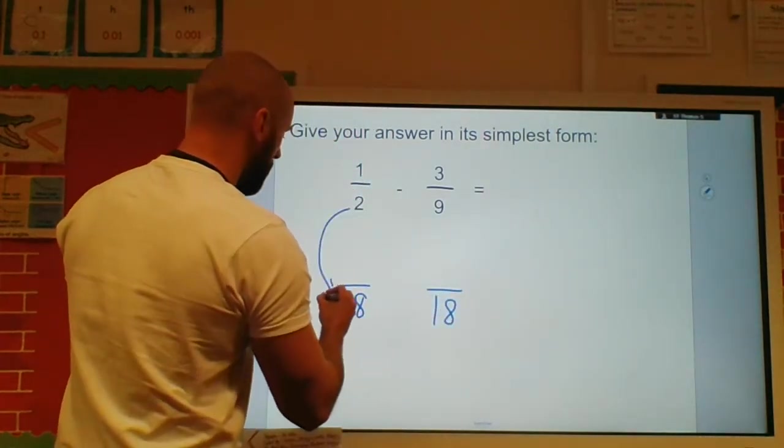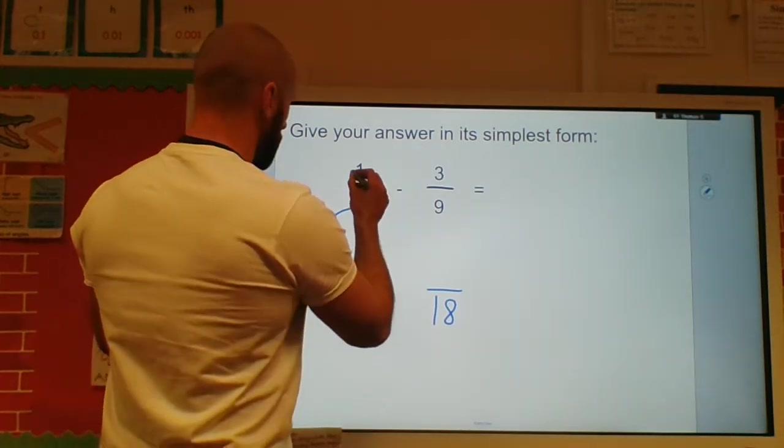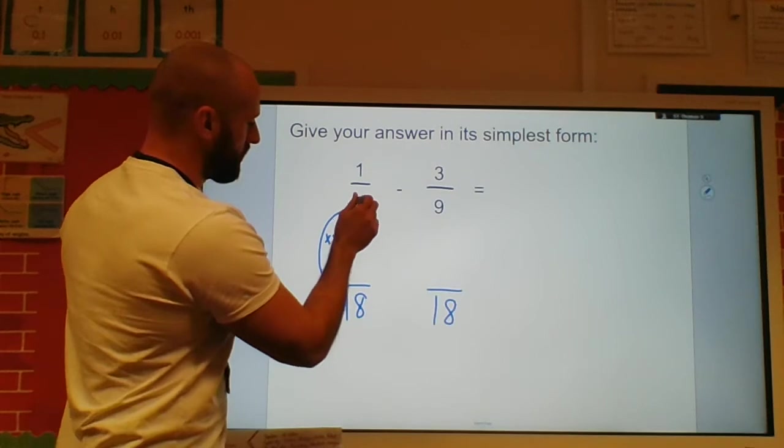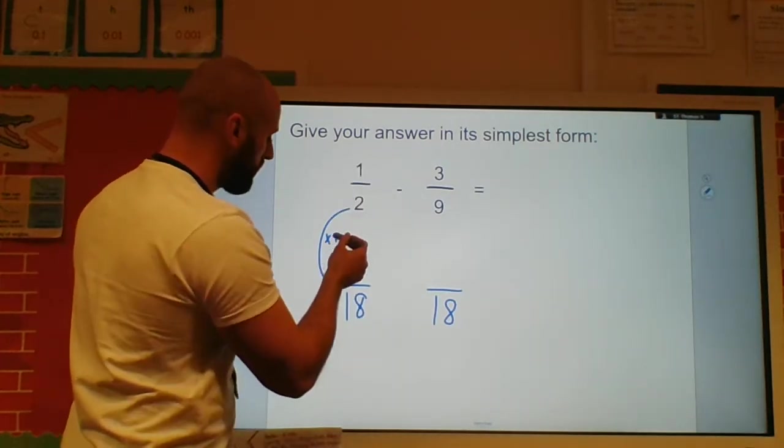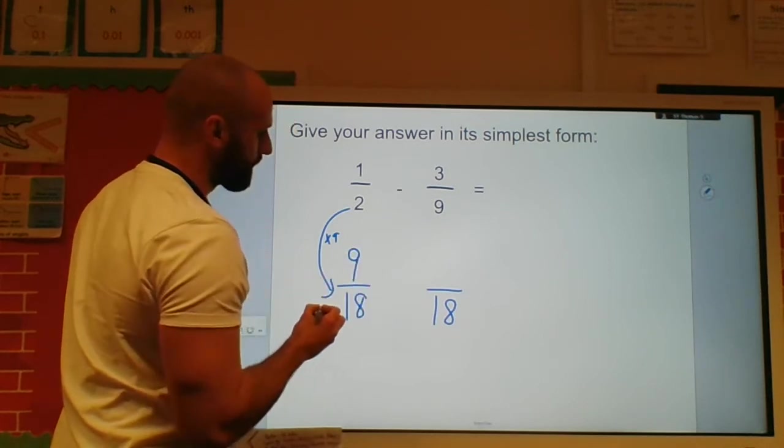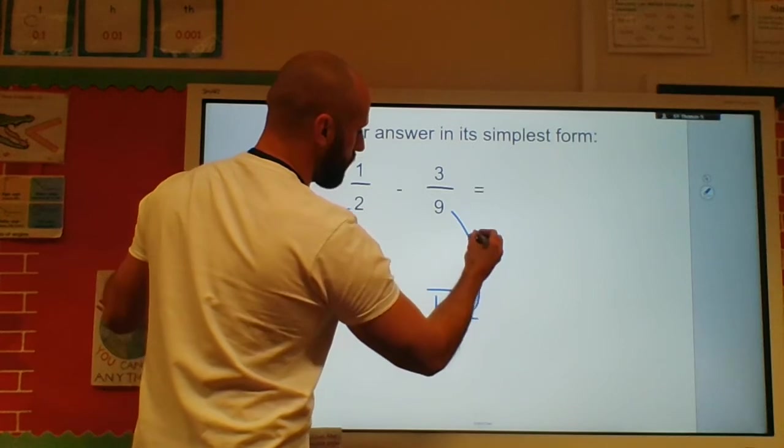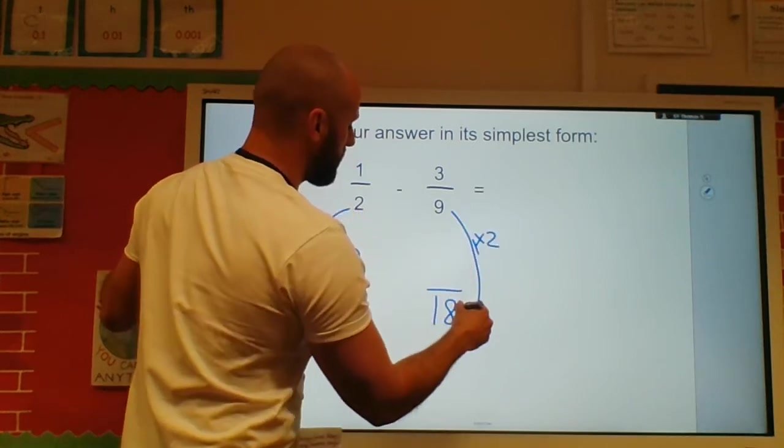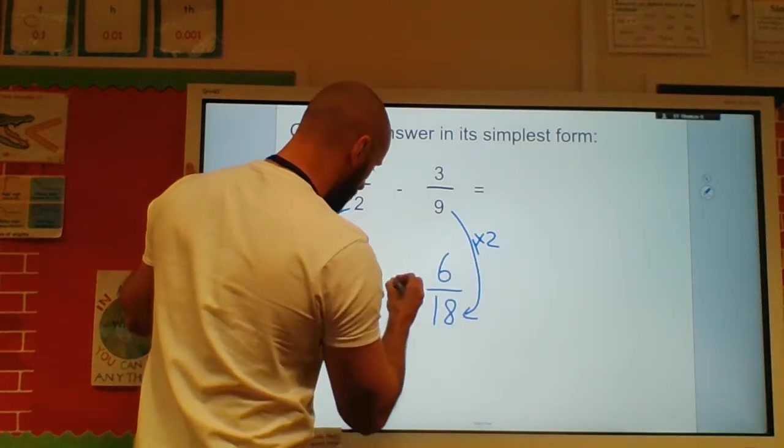Two times nine gave me eighteen. So remember, whatever I do to the denominator, I must also do to the numerator. One times by nine gives me nine.